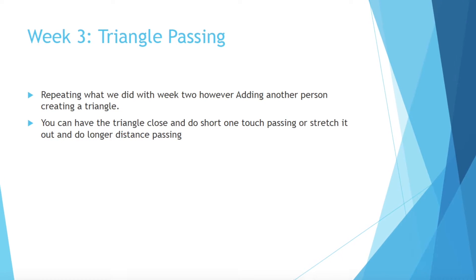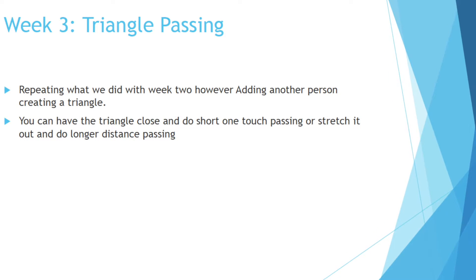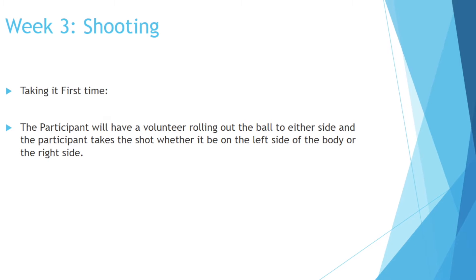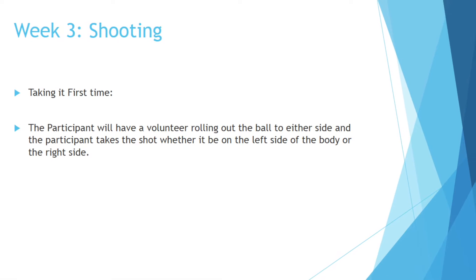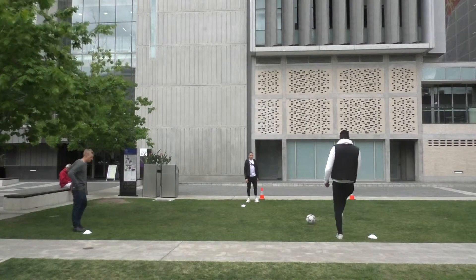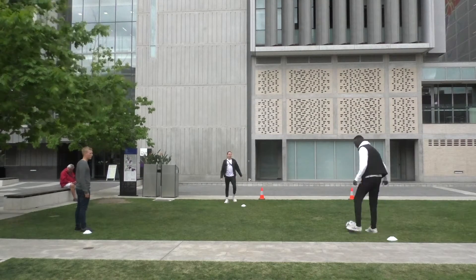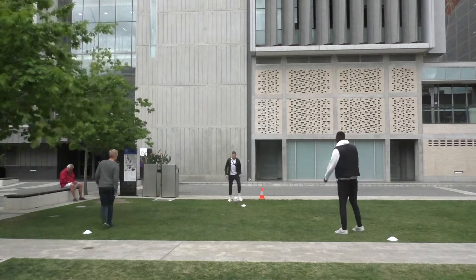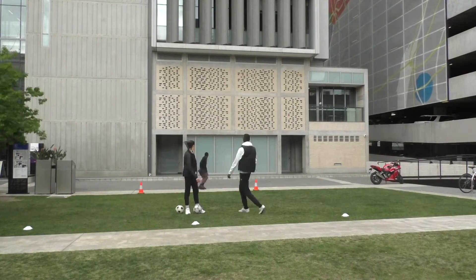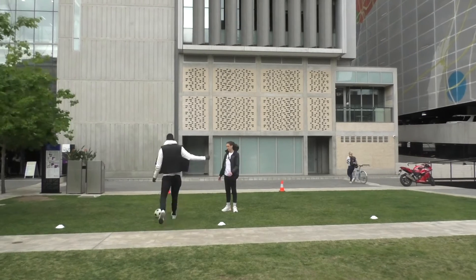In week three, we introduced triangle passing — repeating what we did in week two, but adding another person to create a triangle. You can keep the triangle close and do short one-touch passing, or stretch it out for longer distance passing. For shooting, we introduced the concept of taking it first time: a volunteer rolls the ball out to either side of the participant's body, and he takes the shot whether he is on his left or right foot.